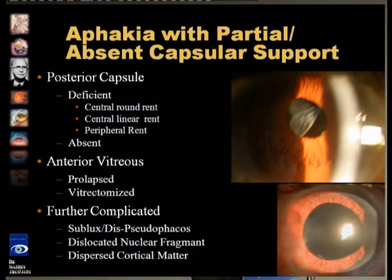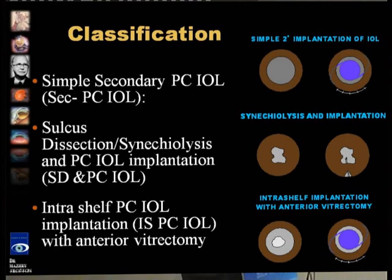Further complications: the aphakia may be further complicated by subluxated or dislocated zonules. We have to identify these by clinical examination and with the help of necessary investigations, along with dispersed cortical matter and other complicated scenarios.